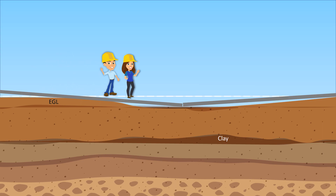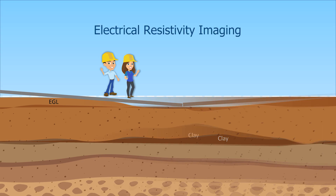We could have avoided the problem if we had a continuous profile of the underlying soil. We can achieve that with the help of electrical resistivity imaging. Can you please explain how that works?